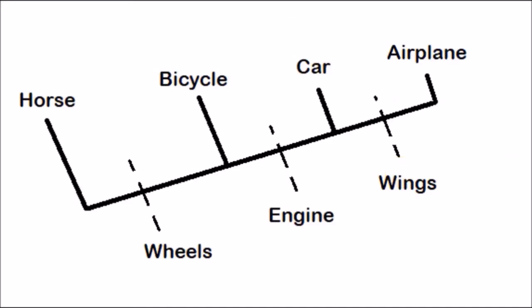Here's another phylogenetic tree that's shaped a little differently. Instead of organisms, it uses methods of transportation to illustrate the concept. You start with a horse, and at each branch point there is a common ancestor. What's interesting is that you can see characteristics: wheels differentiate a bicycle from a horse; an engine differentiates a car from a bicycle; and wings differentiate an airplane from a car. If a trait appears at a branch point, everything above it also has that trait — so wheels are found in bicycles, cars, and airplanes.